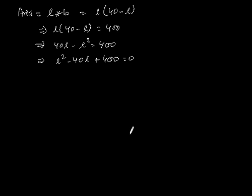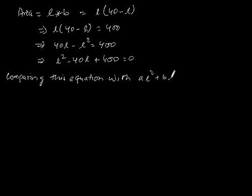Now, comparing this equation with aL² + bL + c = 0, we get a = 1, b = -40, and c = 400.